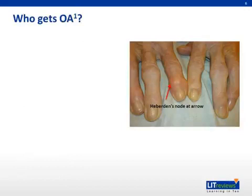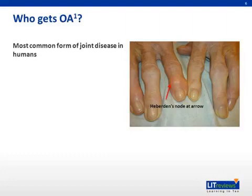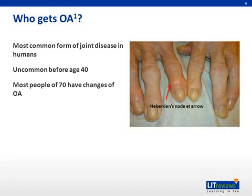So who gets OA? Actually, most of us will. The question we are currently trying to understand is why some patients get a debilitating form, while others are barely symptomatic. Generally speaking, osteoarthritis is uncommon before the age of 40, and after 70, most people will have some changes associated with OA.